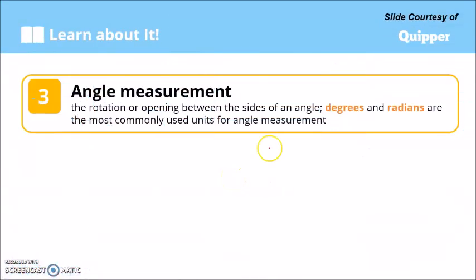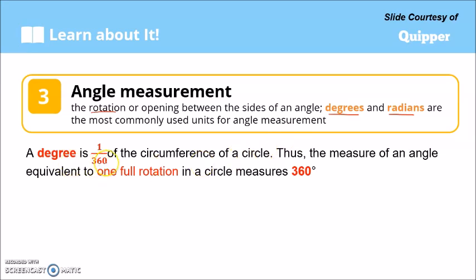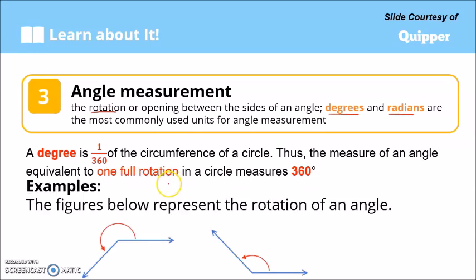Angle measurement is the rotation or opening between the sides of an angle. It can be measured using degrees or radians, which are the most commonly used units. A degree is one over 360 of the circumference of a circle, so the measure of an angle equivalent to one full rotation measures 360 degrees.